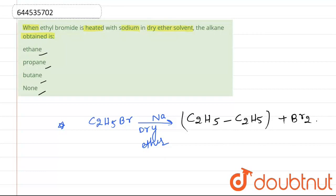From here if you observe, the compound that is obtained is actually butane. The alkane is butane. This is obtained when ethyl bromide is heated with sodium in dry ether solvent. So the correct option for this question is option 3. Thank you.